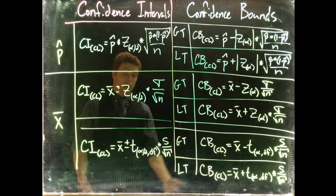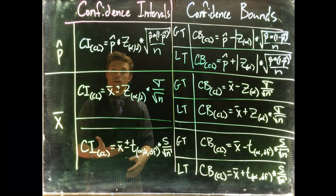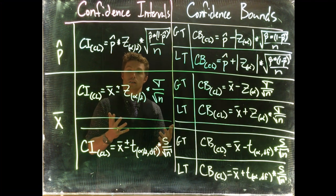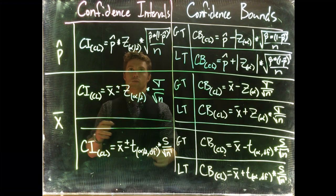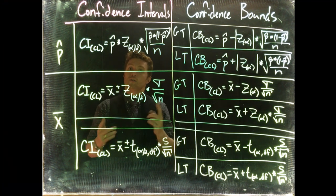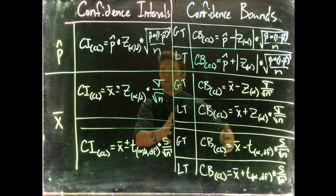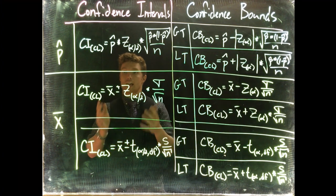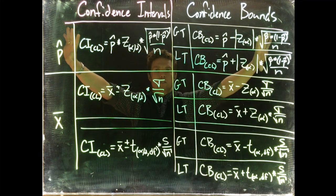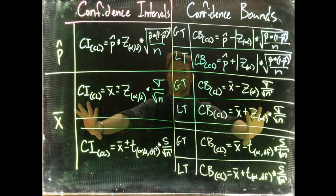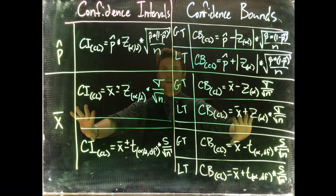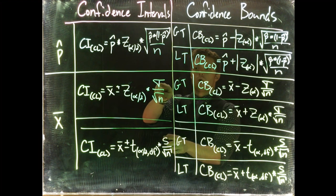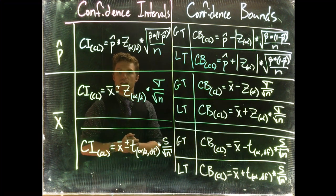There are a lot of equations, but it really comes down to identifying a few things. One: are we dealing with a one-tail or a two-tail confidence region? If two-tails, we're looking at confidence intervals; if one-tail, confidence bounds. Two: is this categorical or numerical data? Categorical means proportions; numerical means means. And if we're dealing with means, the last thing is whether we're using the population or the sample standard deviation.